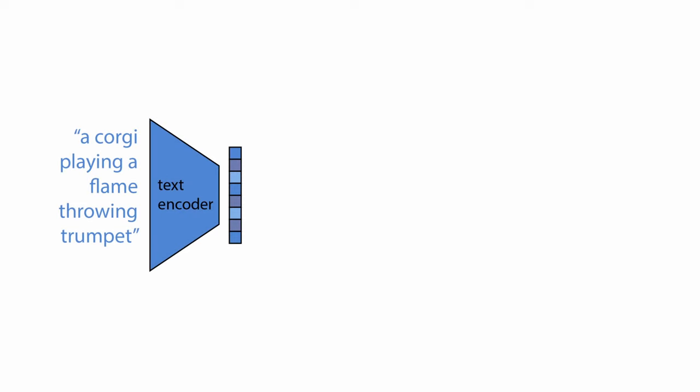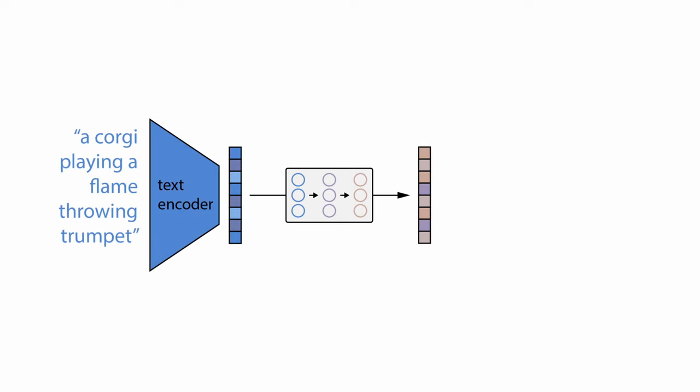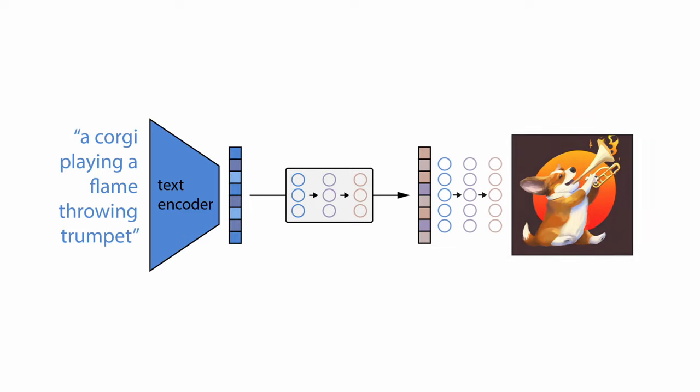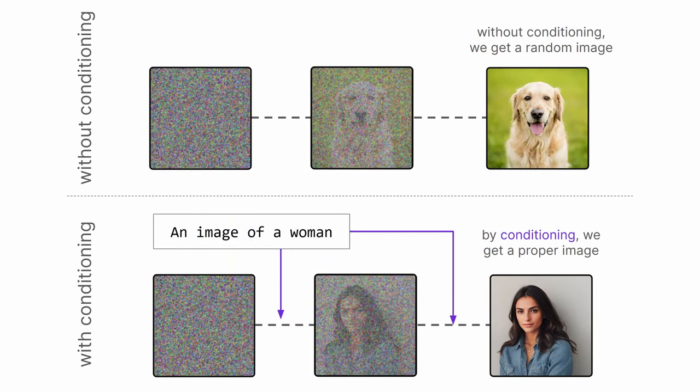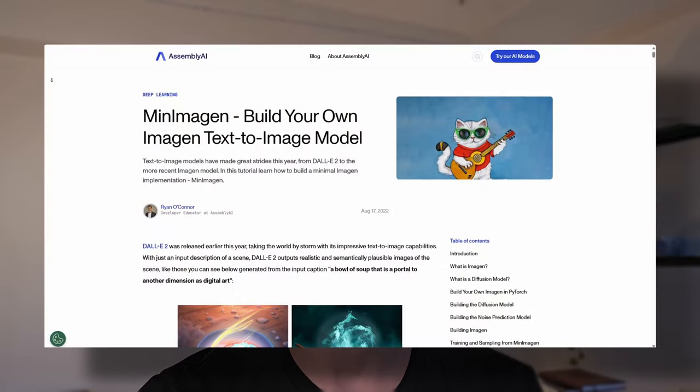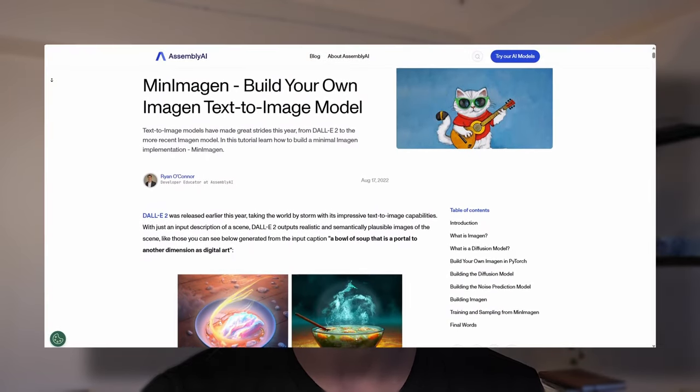To generate an image, DALL-E 2 will embed the input text into this meaning space, map the meaning textual vector to a visual meaning vector, and then decode this visual meaning vector into an image. How this works in practice is by conditioning the diffusion model which generates the image. Diffusion models use what are called UNets to iteratively denoise a Gaussian input into an image, and the meaning vector is used to condition this process to generate a specific image. You can read our article on building your own text-to-image model if you want to see how this works under the hood.